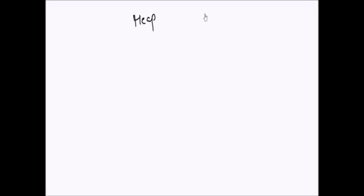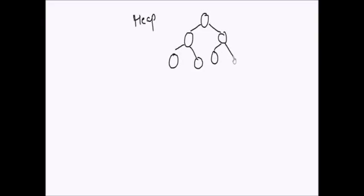Today we will be discussing a data structure which is mostly used to find min, max, kth min, kth max in an input space. That data structure is heap. Heap is a data structure where elements are stored in a particular order, and that order decides the type of heap it is.